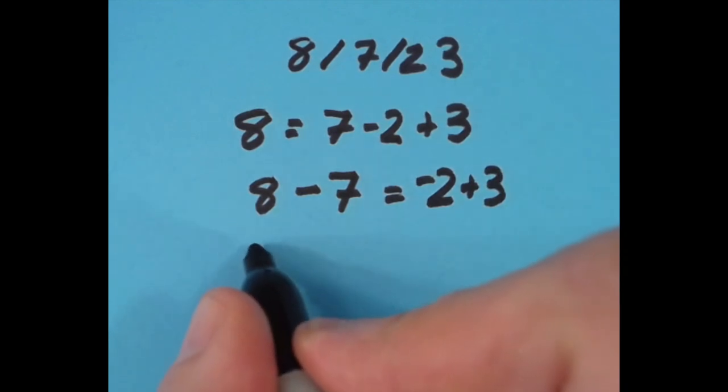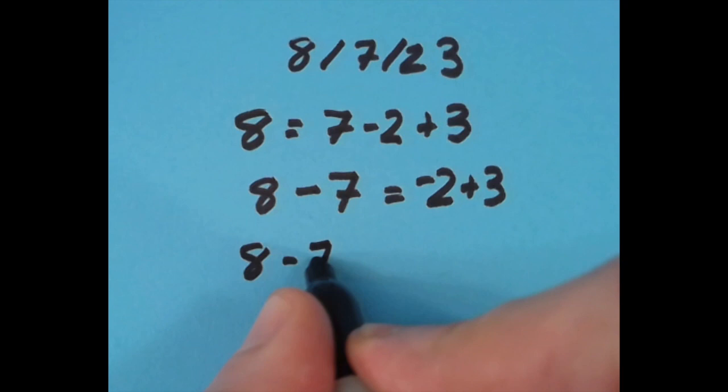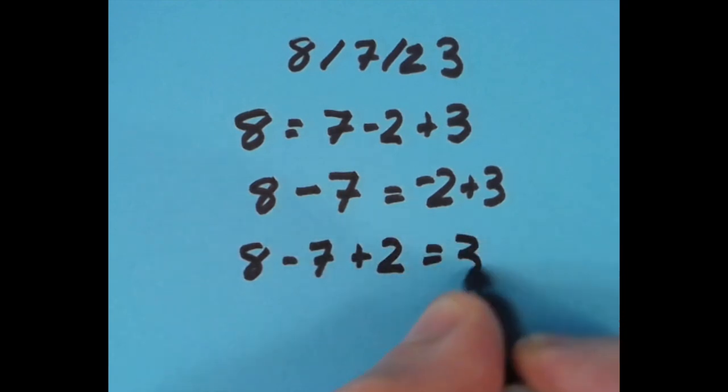Then with the equal sign all the way to the right, I said that 8 minus 7 is 1, and 1 plus 2 is 3.